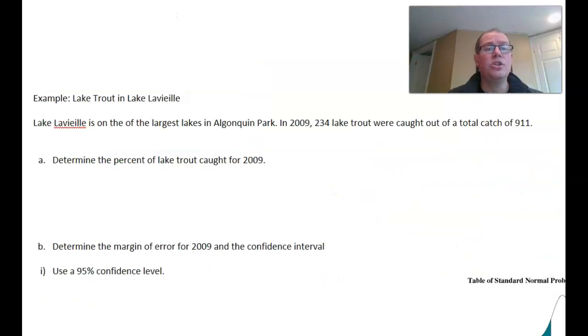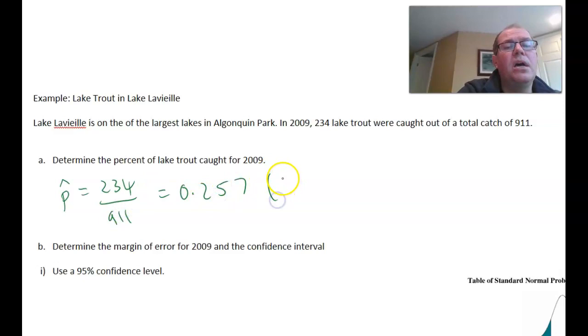Let's do a new example. In 2009, they caught a sample of fish in Lake Lavier, which was one of the largest lakes in Algonquin Park. 234 out of 911 fish that they caught were trout. That gives us our P hat: 234 out of 911, which gives us to three decimal places, 0.257. So 25.7% is our estimate for the percentage of fish in that lake that are actually trout.